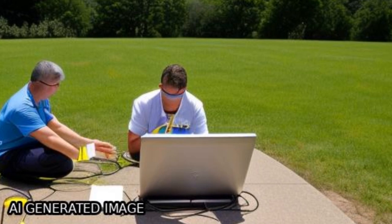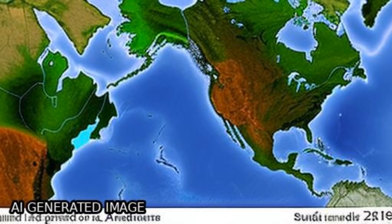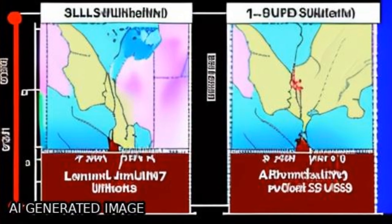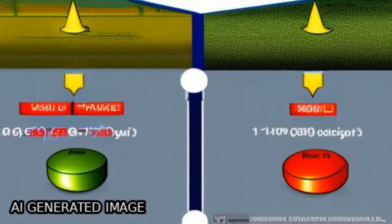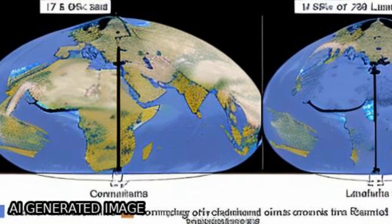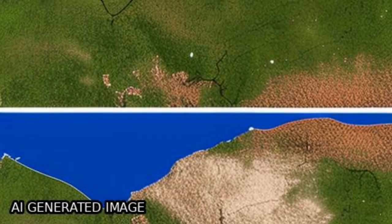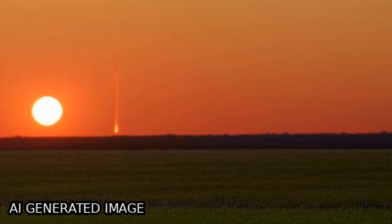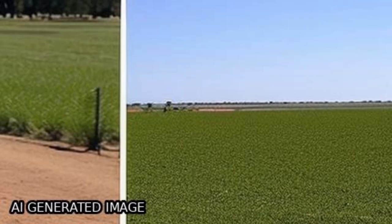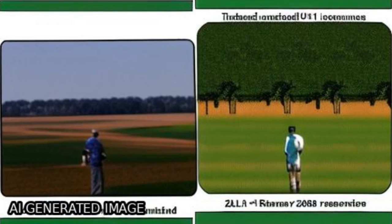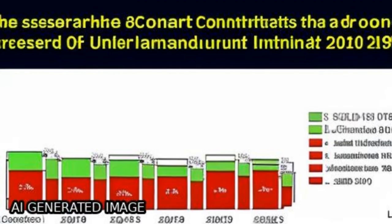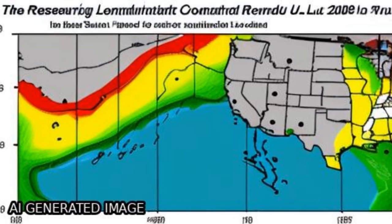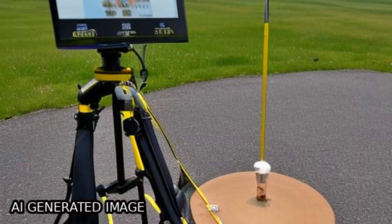The study finds a mean bias and RMSE of 1.0 K and 2.1 K over snow-free land surfaces, minus 1.1 K and 1.6 K over snow surfaces, and minus 0.3 K and 1.1 K over water surfaces.